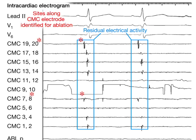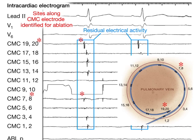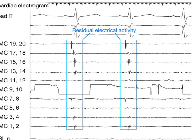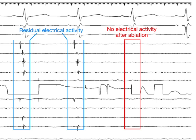If the electrogram shows residual electrical connections between the vein and the left atrium, then additional radiofrequency current is applied at these sites. Sudden loss of electrical activity or dissociation from the left atrial activity on the electrogram indicates that the vein has been successfully isolated. The electrical activity in each pulmonary vein is then rechecked over a 30 to 60-minute waiting period to ensure persistent isolation.